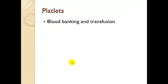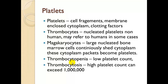Platelets are essentially cell fragments — membrane-enclosed cytoplasm — that house clotting factors. Thrombocytes is the term for nucleated platelets in non-human species, though this term is used synonymously in medicine. If you hear thrombocytosis or thrombocytopenia, it refers to platelets. Megakaryocytes are large nucleated bone marrow cells that continuously shed cytoplasm; these cytoplasm packets become platelets. Thrombocytopenia is a low platelet count, leaving insufficient clotting factor. Thrombocytosis is a high platelet count — it cannot exceed 1 million — and causes clotting at any provocation.